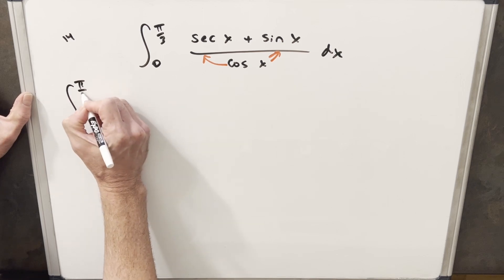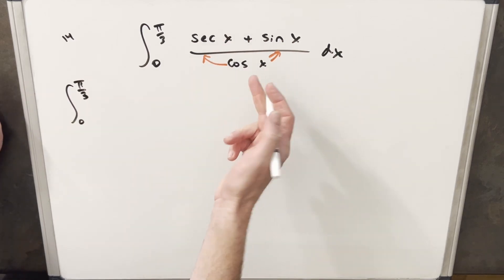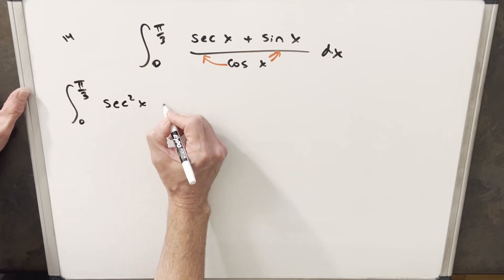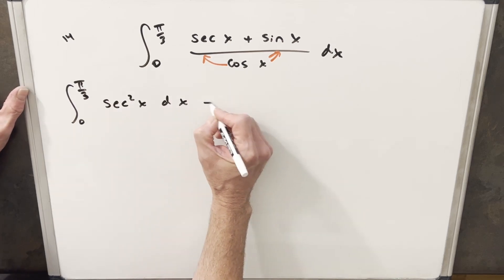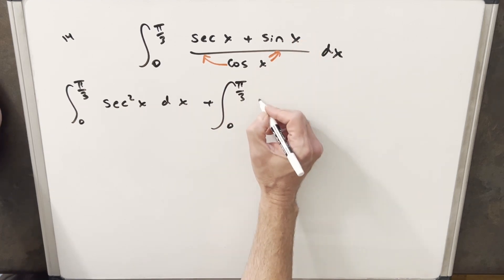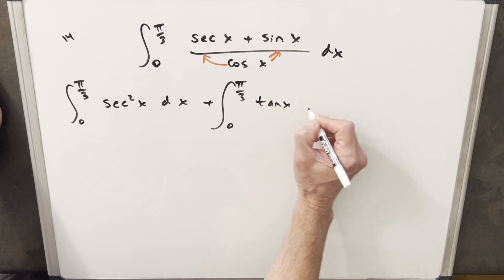Bring the bounds down. Now because secant x is just 1 over cos x and we divide by cos x, this is going to give me just secant squared x here for the first integral. And then for this next one, dividing sine x by cos x is going to give me just tan x.